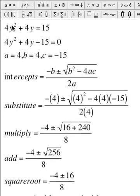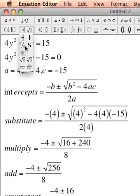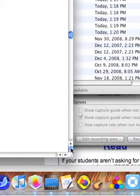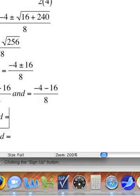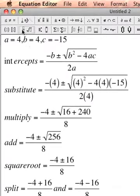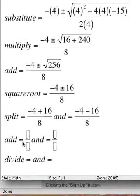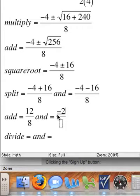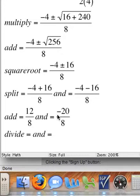Now I'm going to add each fraction separately. I have negative 4 plus 16, that's 12, divided by 8. And I have negative 4 minus 16 is negative 20 divided by 8.